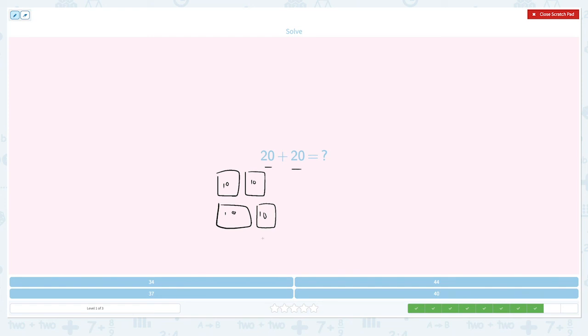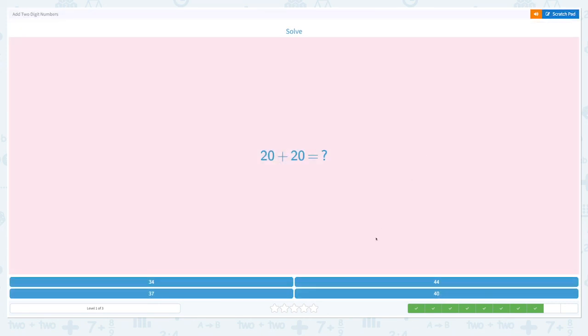How many tens blocks do I have? I have 1, 2, 3, 4. 4 tens blocks. That means the answer is 40. Let's click 40. Awesome.